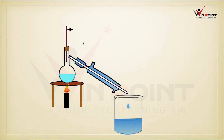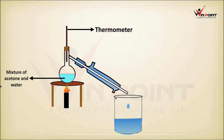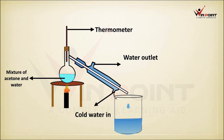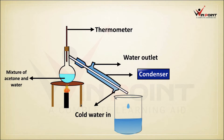In the distillation arrangement, there is a thermometer, and we take a mixture of water and acetone. Water enters and exits through the condenser. When we heat this mixture, acetone has a lower boiling point than water, so it converts into vapor first. That vapor passes through the condenser, which condenses it back into liquid. We collect acetone as the liquid output.